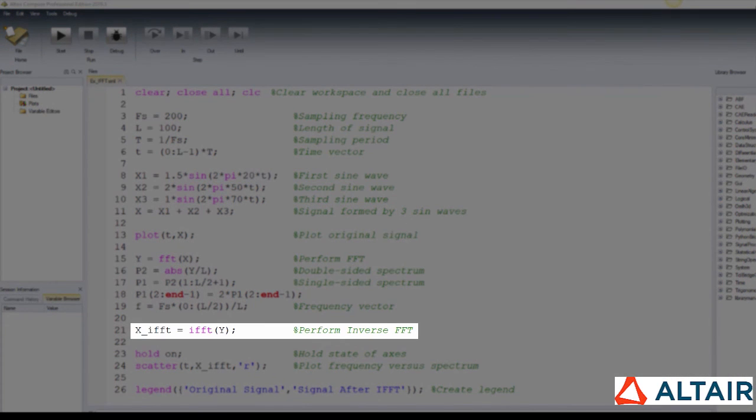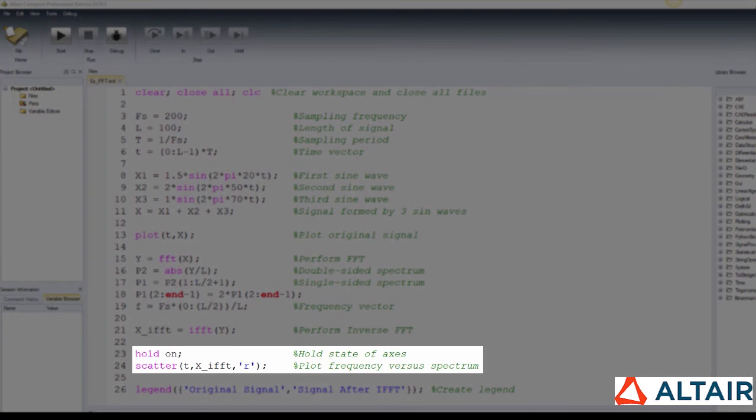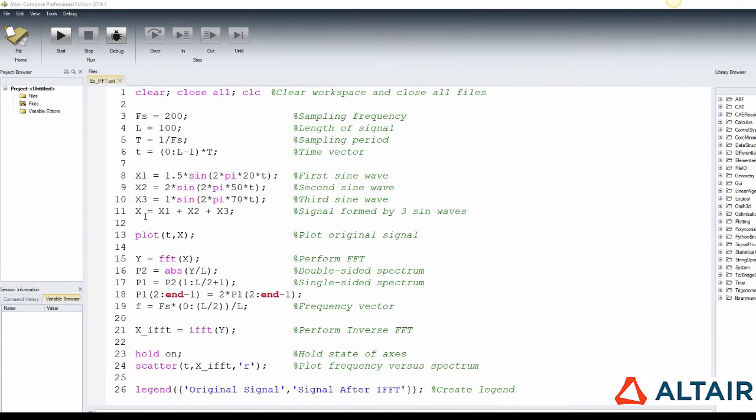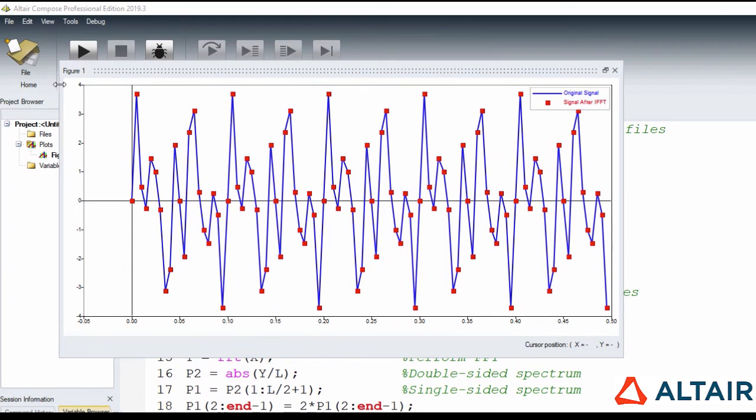IFFT function gives the time domain representation of the input signal, and some other arguments may be given, such as the size of FFT and the dimension on which to operate. And the same principles applied to the FFT are also used here regarding the length of the input vector. Using scatter function, we can plot the points of the output from IFFT function using hold on statement to overlay both curves. The legend follows the order of the curves. And as we run the script, we can see that both the input signal and the output from IFFT function are exactly the same. Which is, of course, aligned with the math theory since no modifications like filters were applied to the original dataset.